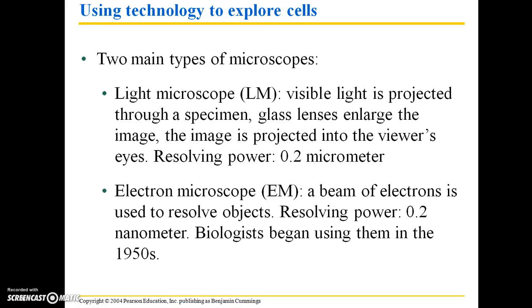There are two main types of microscopes. The light microscope is typically used in college classrooms — for example, anatomy and physiology courses. If you are covering histology and have to look at various types of tissue slides, you're going to be using a light microscope. Light microscopes use visible light that's projected through a specimen, which is typically a pre-prepared specimen on a glass slide. There is a lens that enlarges the image and then the image is projected into the viewer's eyes.